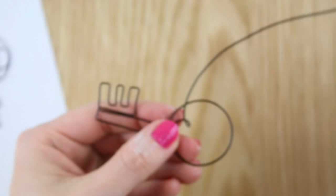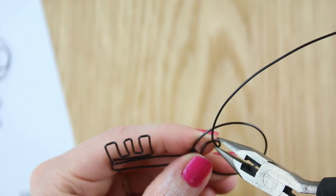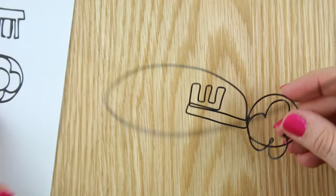Loop the wire over the pliers to make a point. Then use the pliers to gently squeeze at the point to make it more pronounced. Do this for all four petals.